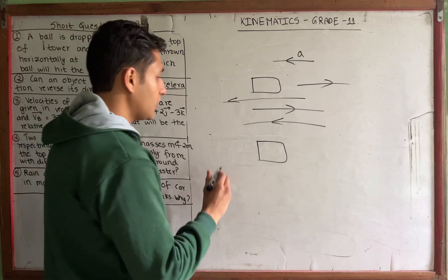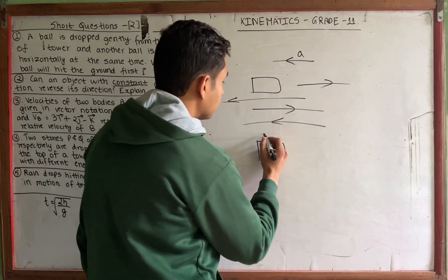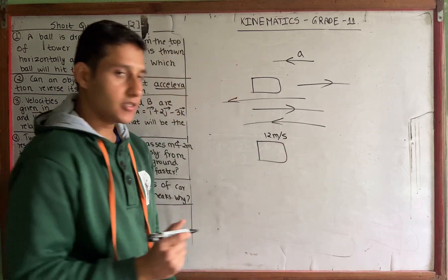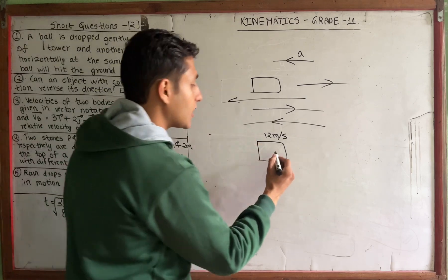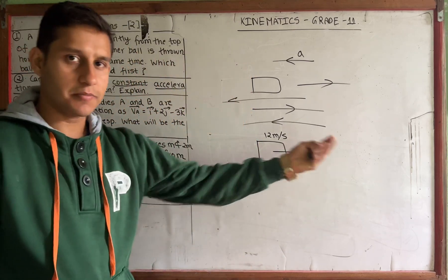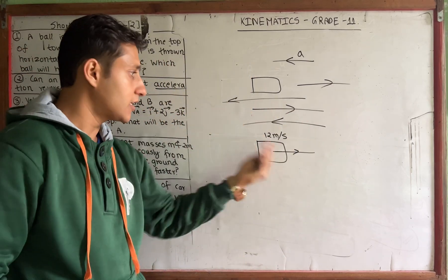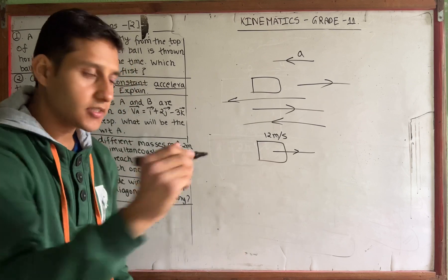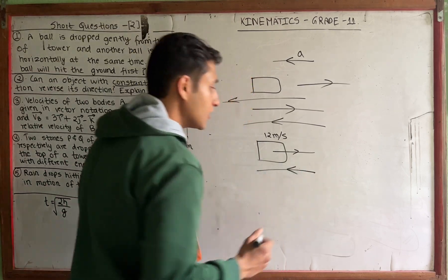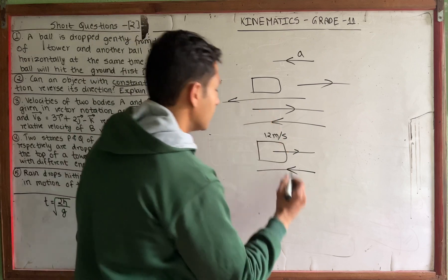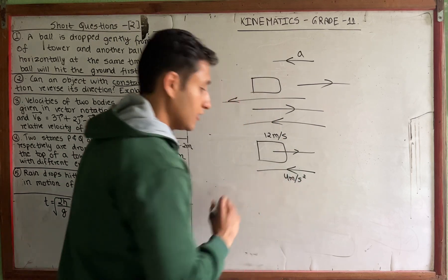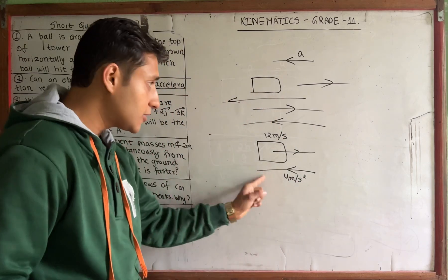Let me explain with an example. Suppose this body has a velocity of 12 meters per second in one direction. Now the acceleration is in the opposite direction — 4 meters per second squared.